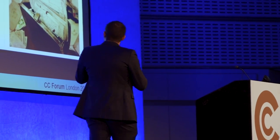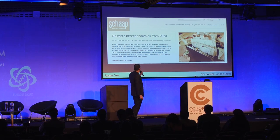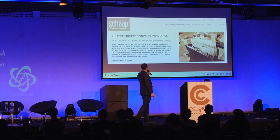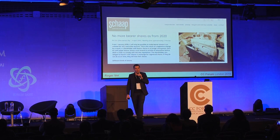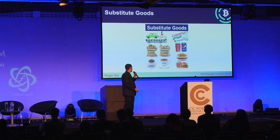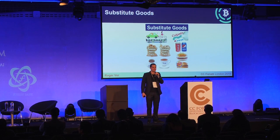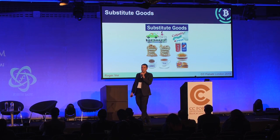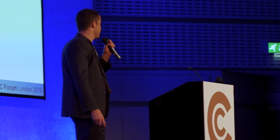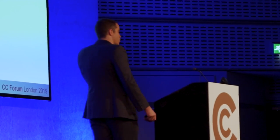The original bearer shares — the pieces of paper — are starting to come to an end. Governments all around the world are saying no more of that. Here's a news article: it says no more bearer shares as of 2020. But technology brings new stuff — substitute goods theory. Like Coke and Pepsi: if Coca-Cola disappeared off the face of the earth, lots more people would start drinking Pepsi. The same with McDonald's. The old types of bearer shares are disappearing, but now we have this new thing called SLP tokens — that stands for Simple Ledger Protocol.